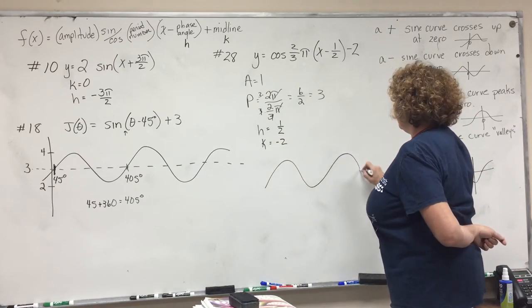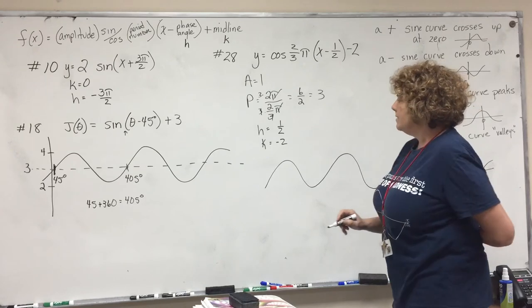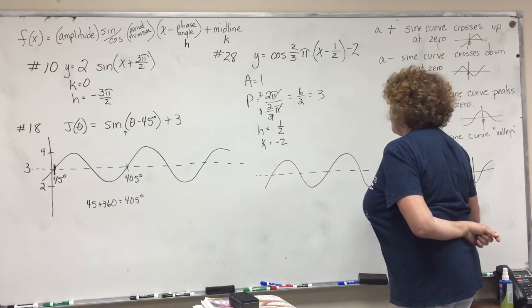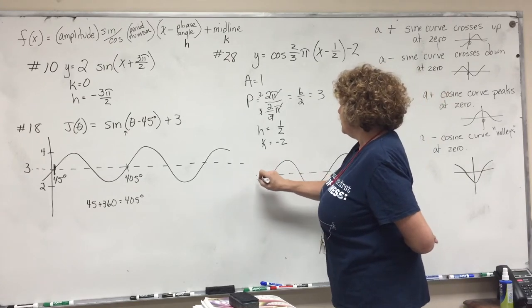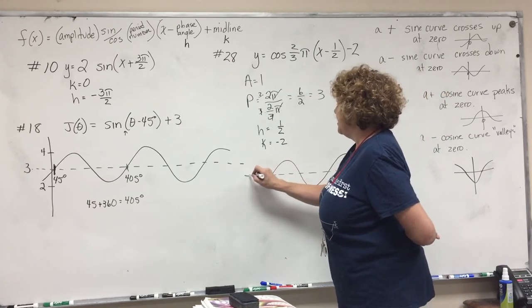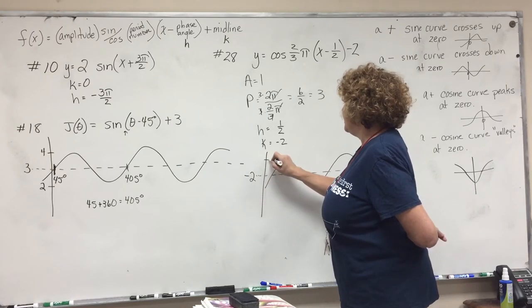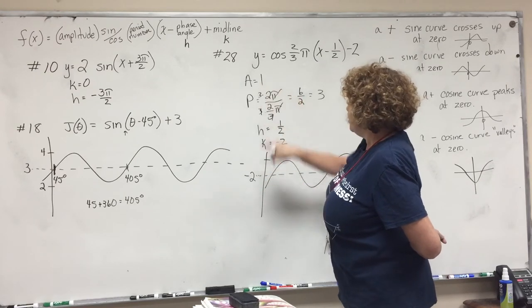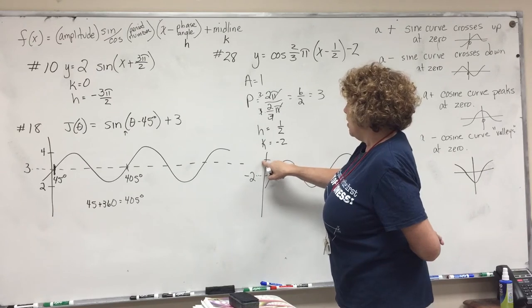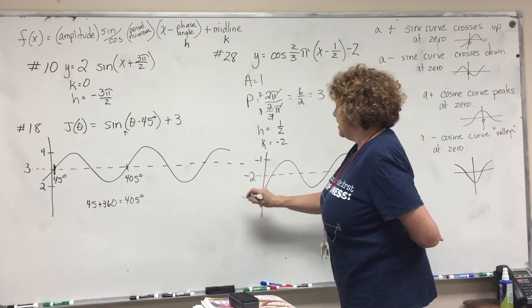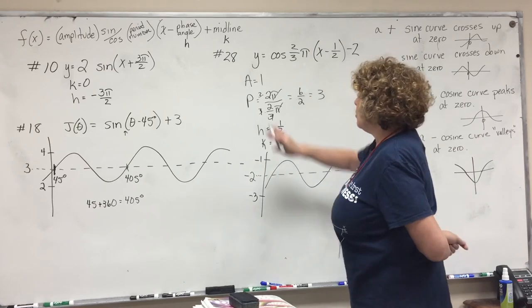So let's go ahead and draw our squiggle. Okay, and draw our midline. Now if you notice, our midline is negative 2. So if I draw in an axis here, our amplitude is 1, so negative 2—1 up from negative 2 is negative 1, 1 down from negative 2 is negative 3. So we've drawn in our amplitude.